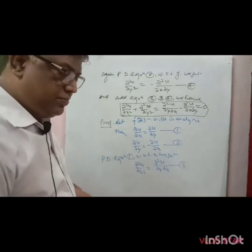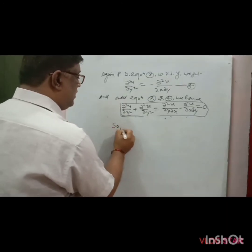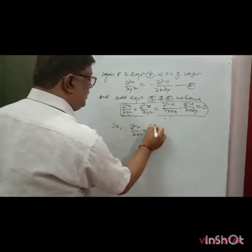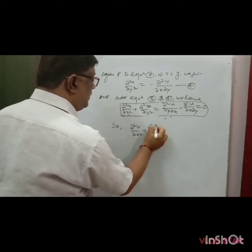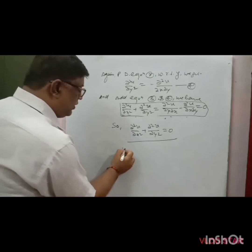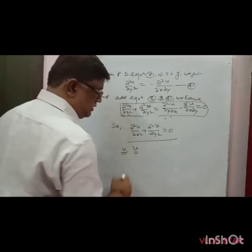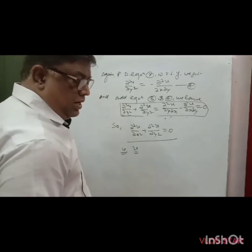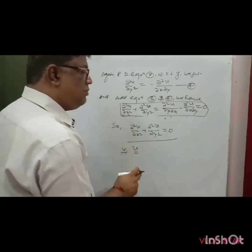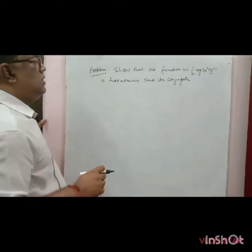Hence u is a harmonic function. Similarly we can show that ∂²v/∂x² + ∂²v/∂y² = 0, so that u and v are both harmonic functions and are conjugate to each other — these are called harmonic conjugate functions.